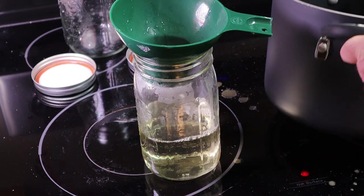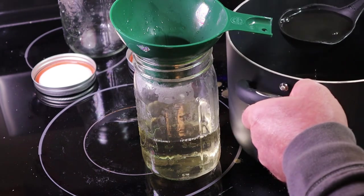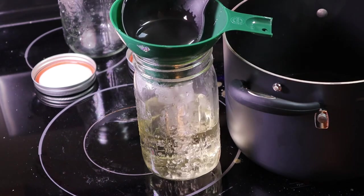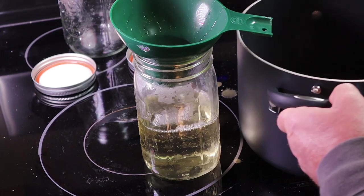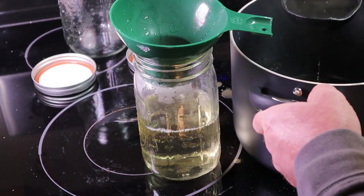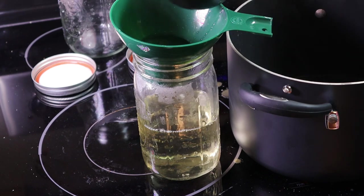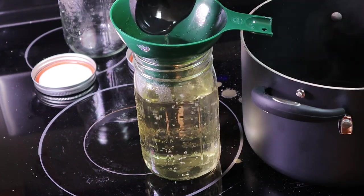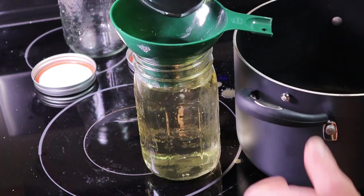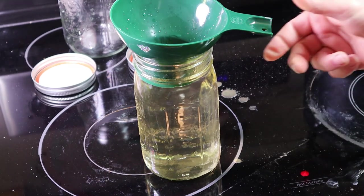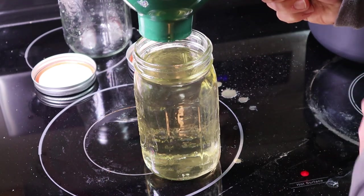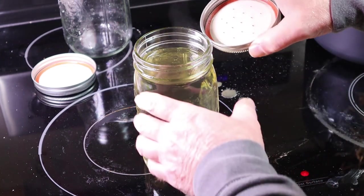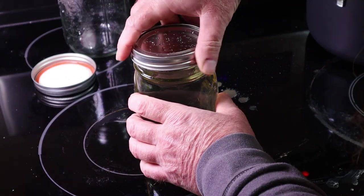Once you add this hot liquid to the jars, you need to let it cool several hours or overnight until it's to room temperature before putting it on the hives. Then you basically just put the cap and the lid back on it and tighten it up.